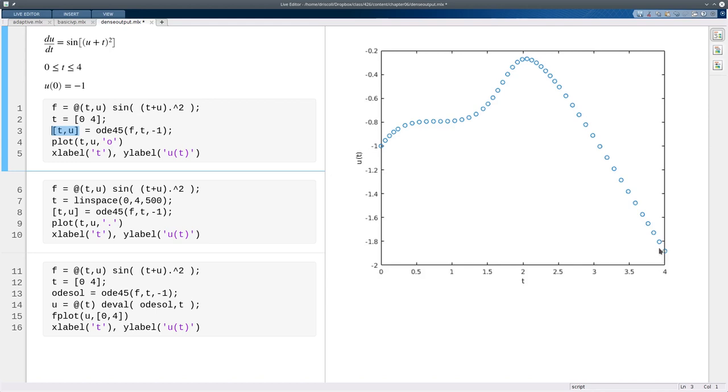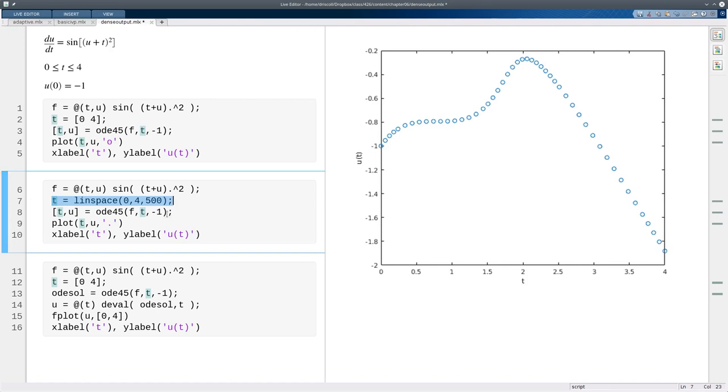But suppose I didn't want these big gaps between the points. Suppose I wanted a lot of points to make a nice, smooth plot, for example. What I can do is set up everything else the same way, except I will tell it, no, I want the solution to be at 500 points from 0 to 4. And then it will evaluate the solution at those points, essentially using interpolation internally.